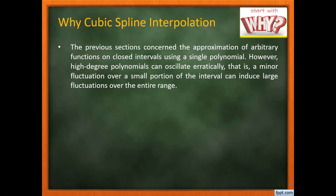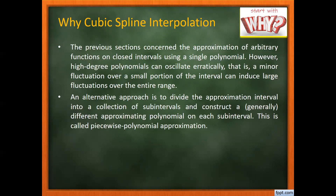High degree polynomials can oscillate erratically, meaning a minor fluctuation or a very small perturbation can induce a large fluctuation over the entire range. So even a small modification in the input variable can produce a large change in the output value. An alternate approach is to divide our interval into a collection of subintervals, construct a polynomial on each subinterval, and join these polynomials at the nodes. This is called piecewise polynomial approximation.